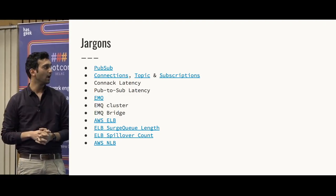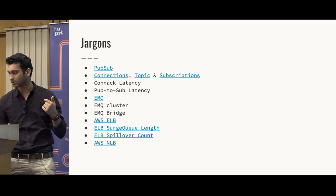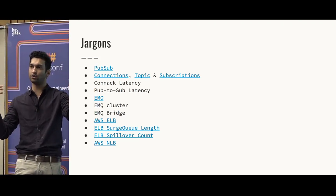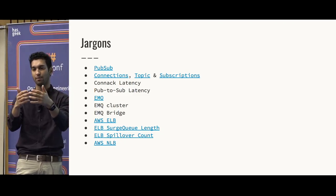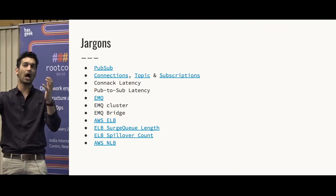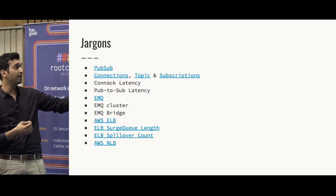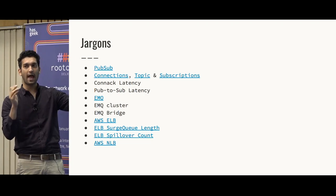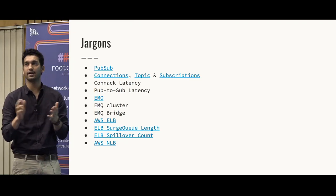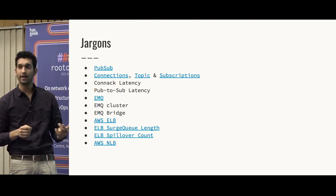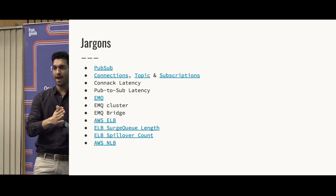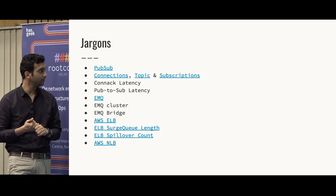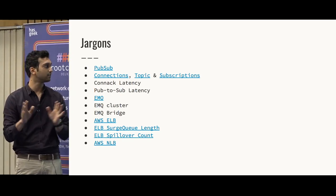Before going into depth, let me cover some jargon. PubSub is a messaging pattern where one user subscribes to a topic and another publishes to that topic — anyone who publishes to a topic I'm subscribed to, I will receive that message. Connection is self-explanatory. A topic is a UTF string you listen to. A subscription is the act of subscribing to a topic. Connect latency is how long it takes a client to connect to the broker successfully. PubSub latency is the average time from when a publisher sends a message to when all clients receive it.